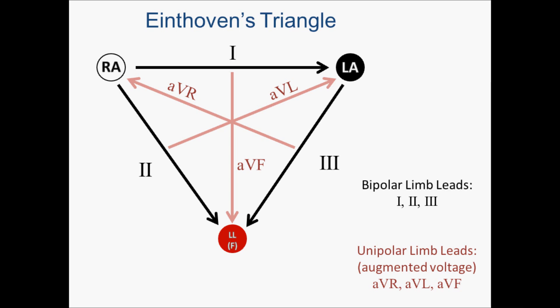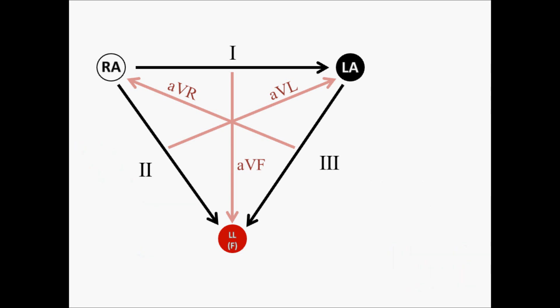And if you can reproduce this triangle, and I think it's pretty easy to do, then you understand the directions of the limb leads. Now take into account that the mean cardiac vector, which is the overall movement of electrical activity through the heart, runs basically from the right shoulder down to the left hip. And the reason that we use lead two, as you can see here, as our main monitoring lead, is because this most closely approximates that mean cardiac vector.